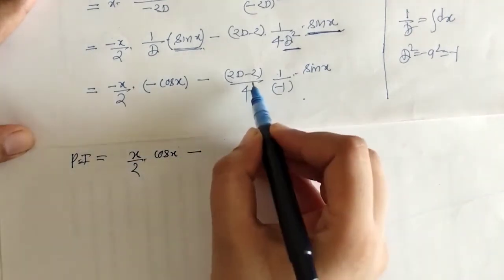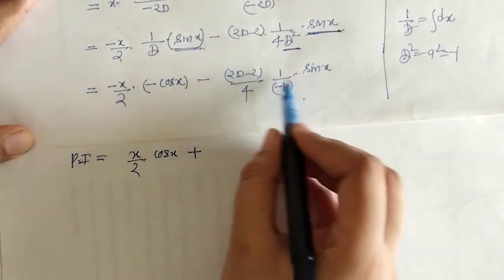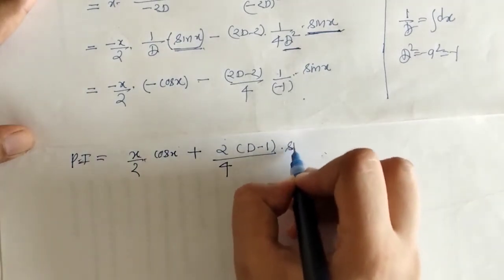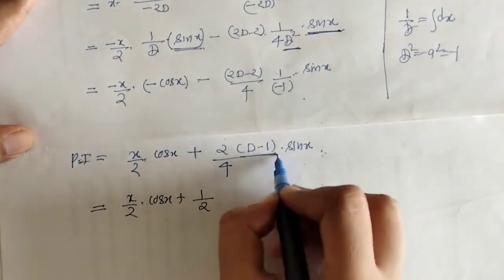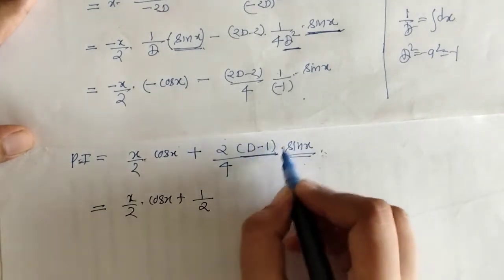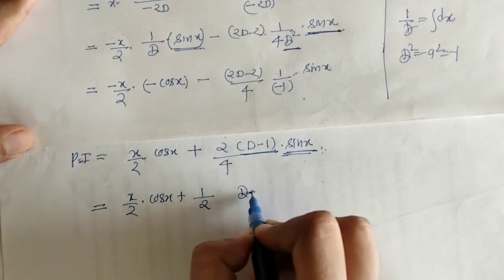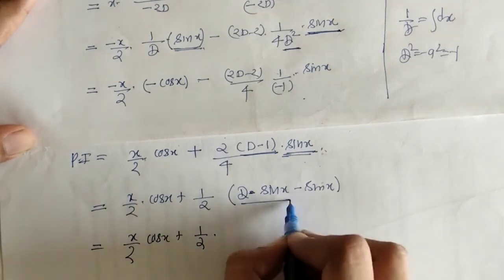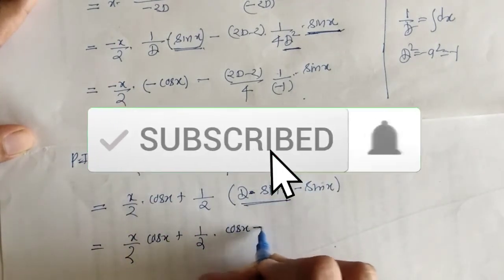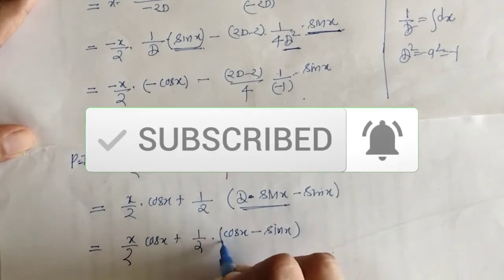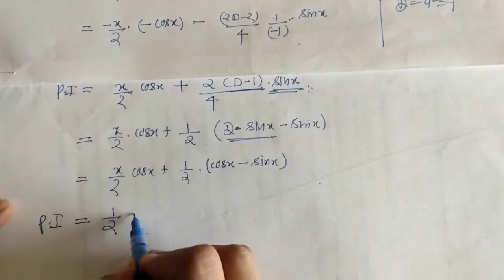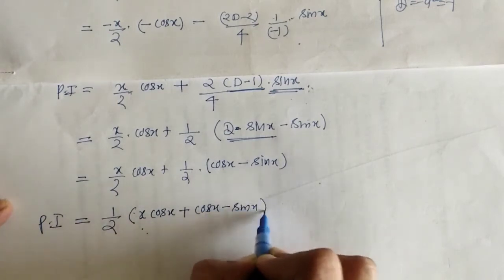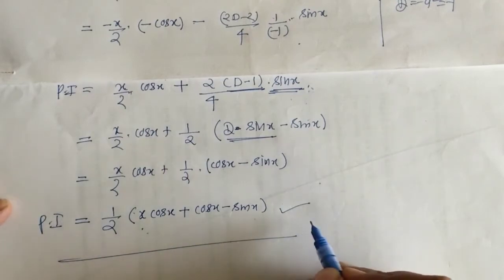Simplifying further, the minus-minus becomes plus. Taking -2 common and the denominator gives 4. We have (D - 1) operating on sin(x): the derivative of sin(x) is cos(x) and sin(x) remains as is. Taking 1/2 outside, we get x·cos(x) + cos(x) - sin(x) as the required PI. So PI = (1/2)[x·cos(x) + cos(x) - sin(x)].